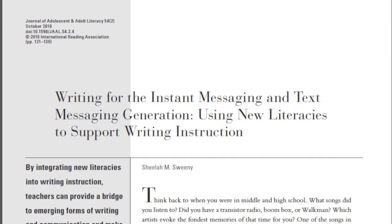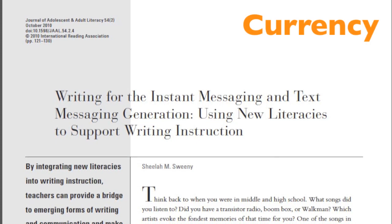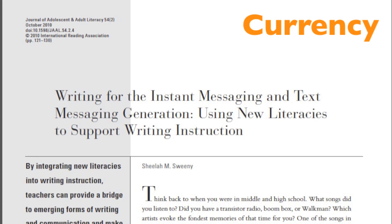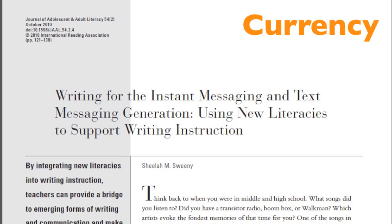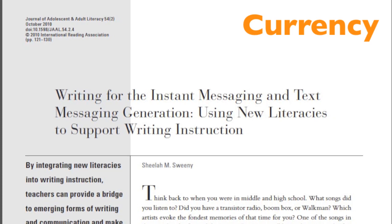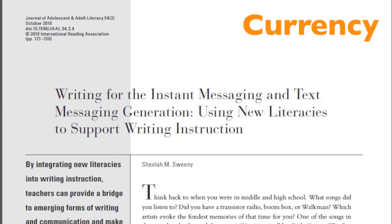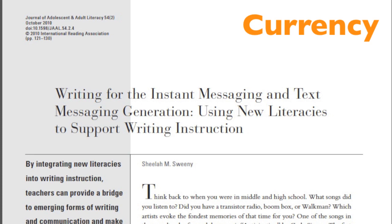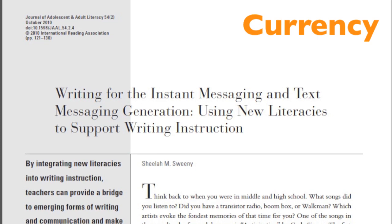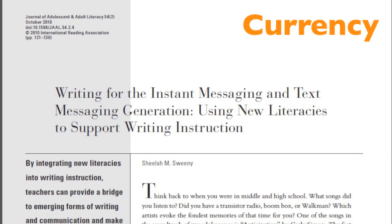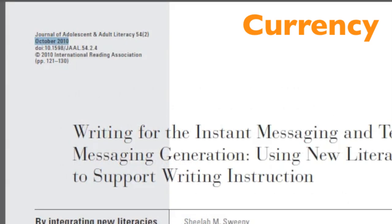Currency refers to the timeliness of the information. It may be crucial when looking for a medical article on brain disease, but not as important when looking for an article on a historical topic. Our article was published in 2010, so we know that the research is current and appropriate for our topic, which is a fairly new issue.